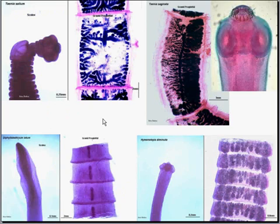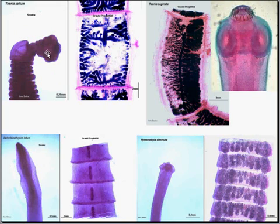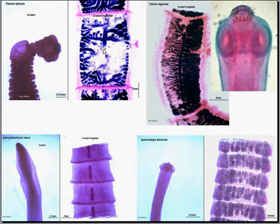To show you what some of these scolices and proglottids look like from the various species — this is the classical scolex from Taenia solium, the parasite that we just talked about, the pork tapeworm. You can see here are the little segments of the tapeworm, and here is the head, differentiating in a sucker fashion, like we saw diagrammatically.